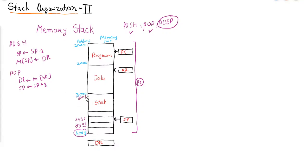If the stack pointer reaches the boundary value, it results in stack overflow. For pop, if the top of the stack is at address 3001, the stack pointer is incremented, the element is popped into DR, then it points to 3002, and so on — 3003, 3004, up to 3998, 3999, 4000. The base address is 4000 and the last element that can be stored is at 4000. Overflow and underflow must be checked by the operating system.